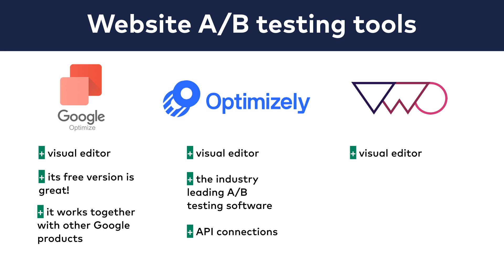The big question mark at Optimizely, for most smaller companies, is the price tag. Their current pricing is not on their homepage — you should contact sales to learn about it — but you can expect it to be a couple hundred dollars per month or more. So Optimizely tends to be the preferred choice of companies who already have a whole A/B testing team and a bigger budget for their A/B testing program.